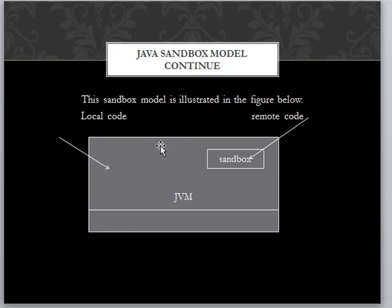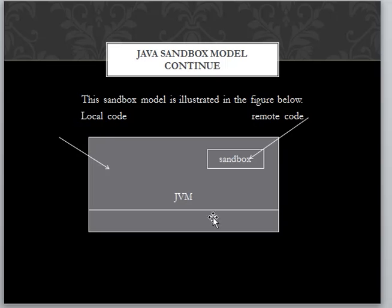The diagram illustrated below shows what is Java Sandbox Model. Here you can see that this is our local code — the file system — which has access to all resources, all system. But this is an applet code or remote code. This is untrusted code, so we provide this code only limited resources which are inside the Sandbox.